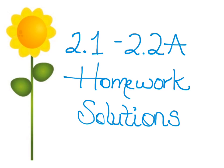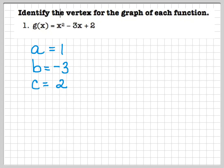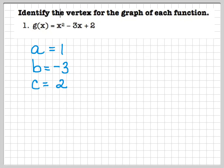Let's start with question number one. You're asked to find the vertex. This is in standard form, so the vertex is not apparent — we have to work for it. We need to know the values of a and b in particular. From standard form, a is 1 and b is negative 3.